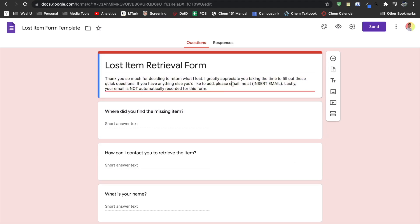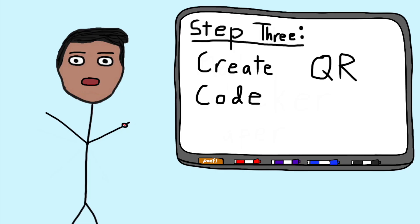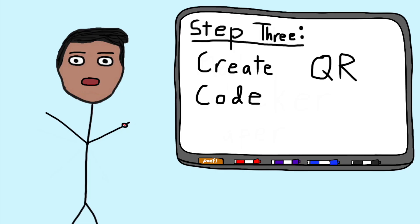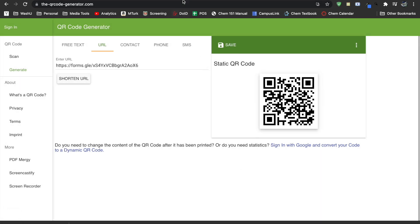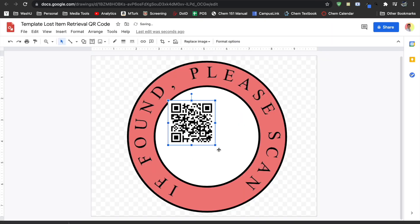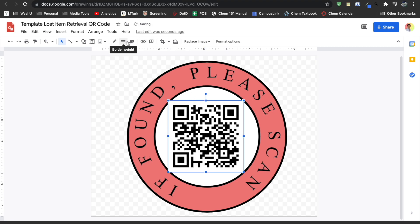Third, use a QR code generator and put that straight into Google Drawings. Here, you can adjust the formatting of the text or the color to make it something that you really like.